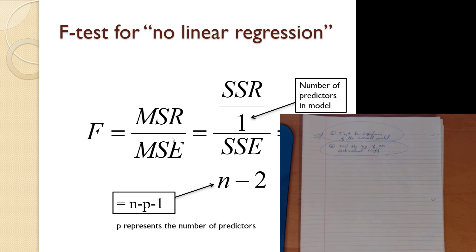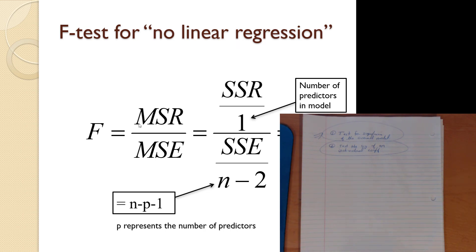Looking at the numerator for this F-statistic, it's a mean squared of the regression — we're squaring stuff. It's like variation you can explain relative to variation you can't explain. Mean squared error is variation you cannot explain. In Chapter 11, tests for inference, it was a chi-squared test statistic. The interesting component here is we have a chi-squared distributed variable — the SSR and the MSR follow a chi-squared distribution, in both the numerator and the denominator.